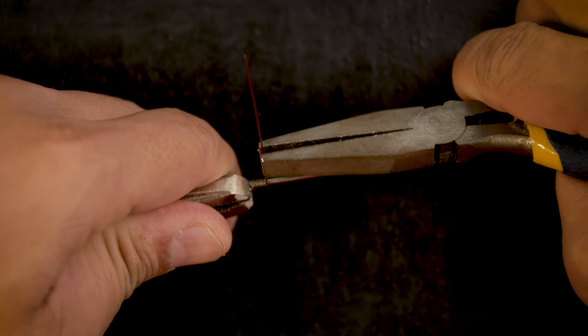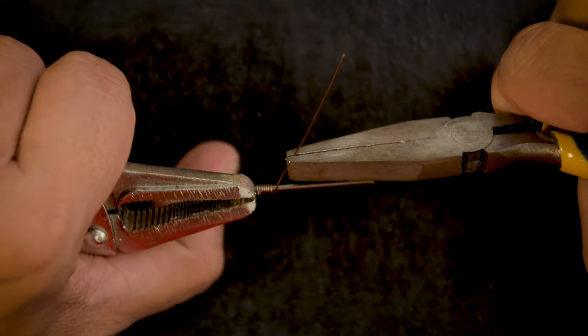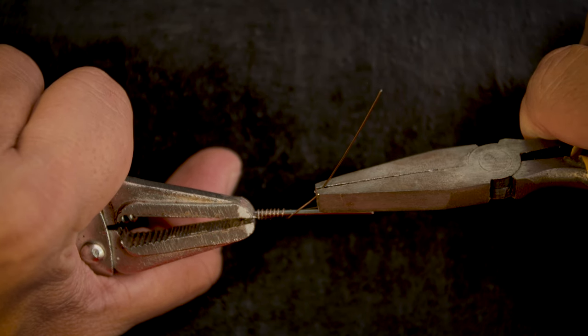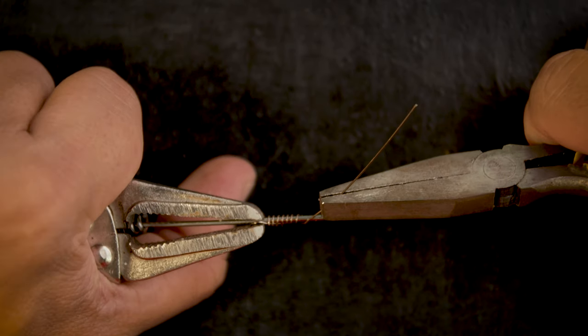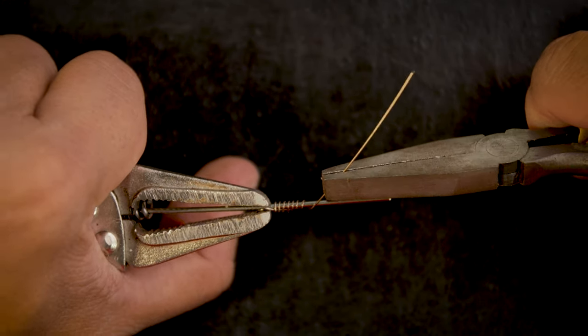Alright, now once you have that, cut quite a few there. Grab your wire, the tag end, and pull on it until you see a spring forming like so.